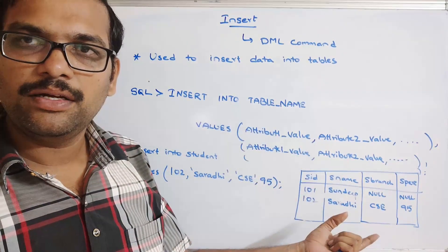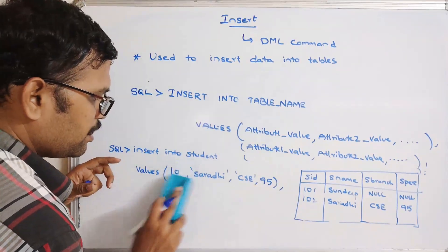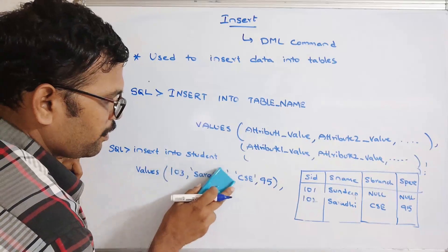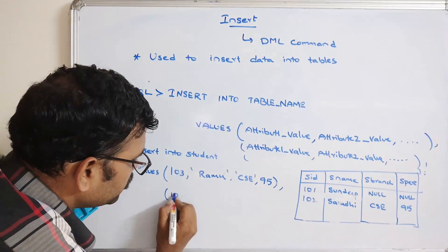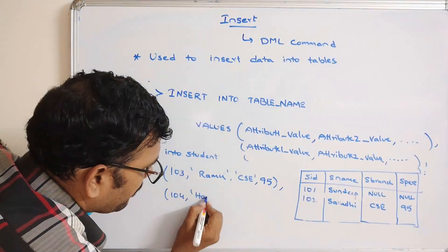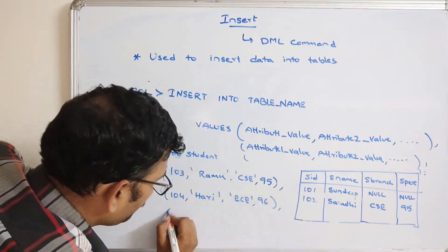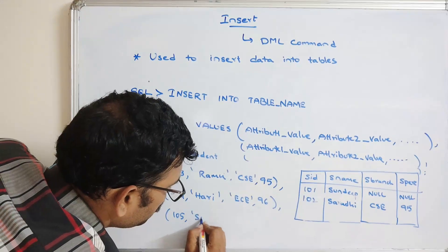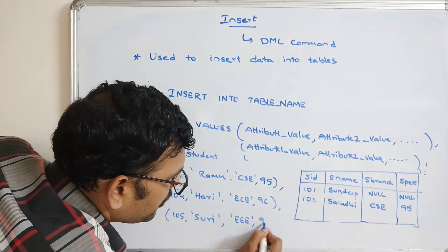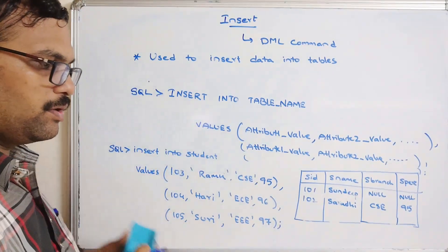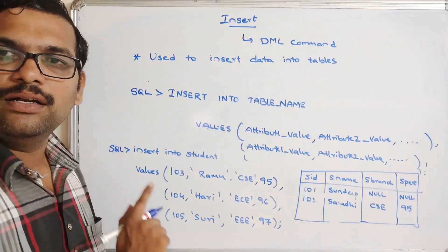For example: INSERT INTO student VALUES (103, ...), (104, 'hari', 'ece', 96), (105, 'suri', 'eee', 97). Using one INSERT command with comma-separated row tuples will insert all three rows into the table at once.